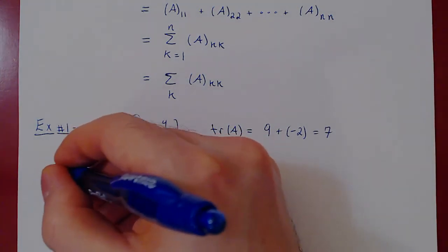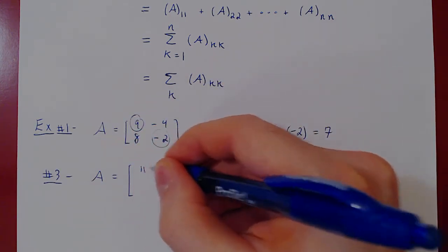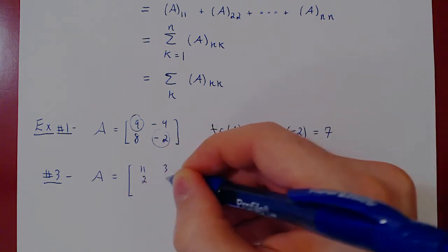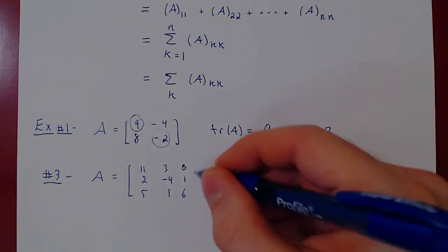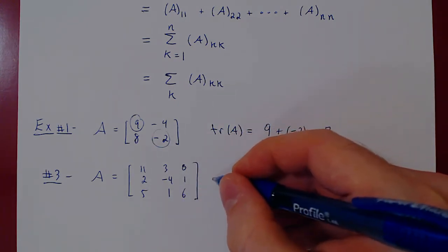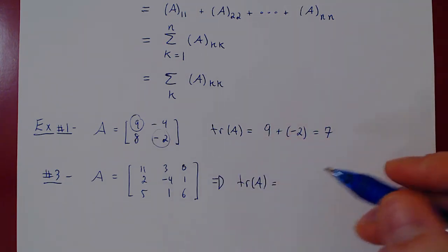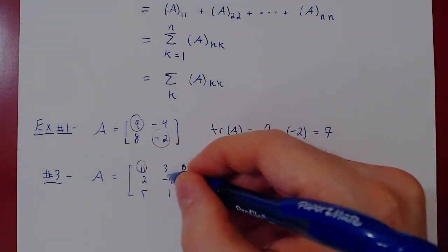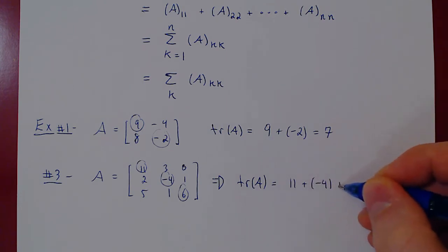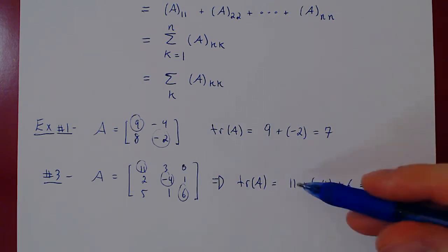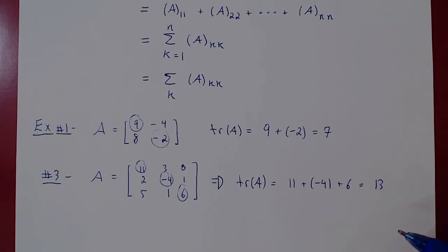What if A were, say, a 3 by 3 matrix? 11, 3, 0, 2, minus 4, 1, 5, 1, 6. Well, the trace of A again is the sum of the diagonal entries. So 11, negative 4, 6. So it is simply 11 plus negative 4, plus 6. Well, 11 minus 4 is 7, plus 6 is 13. And that is the trace of this matrix.